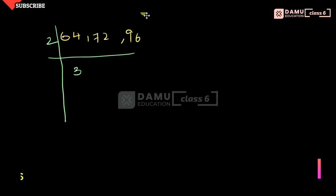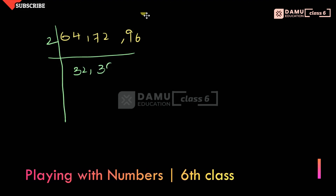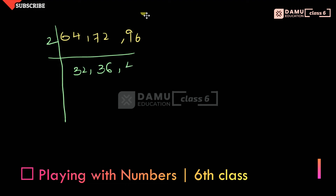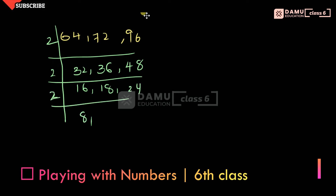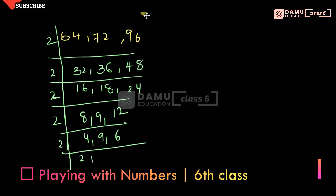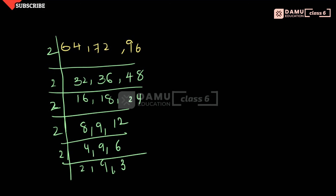For all these numbers we calculate the LCM using the long division method, dividing repeatedly by 2 until we get down to 9 and 3, then dividing by 3. This gives us the prime factors needed to compute the LCM.